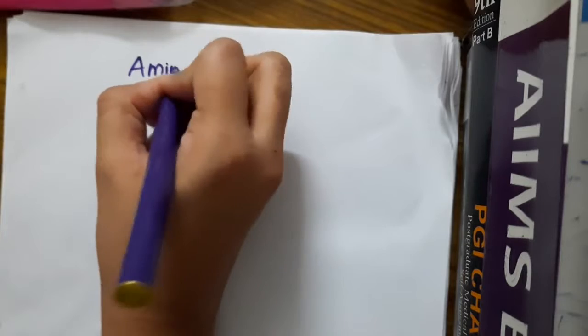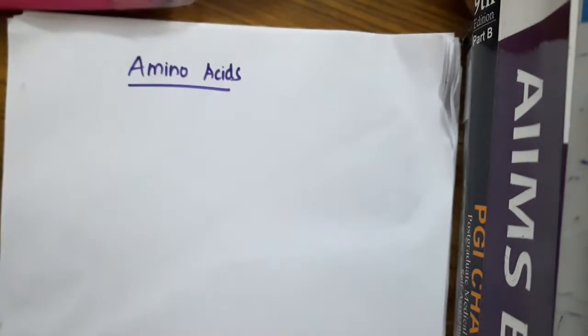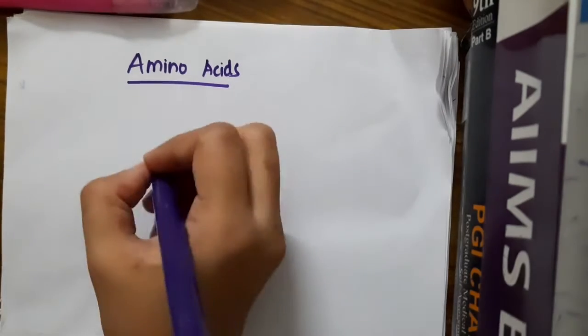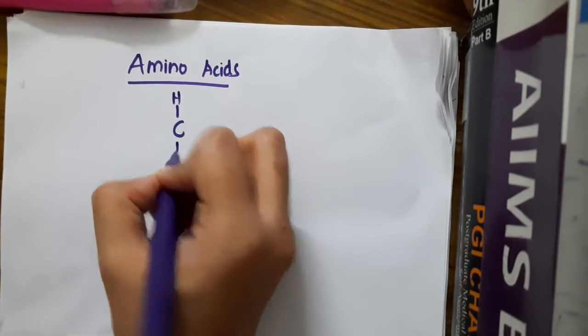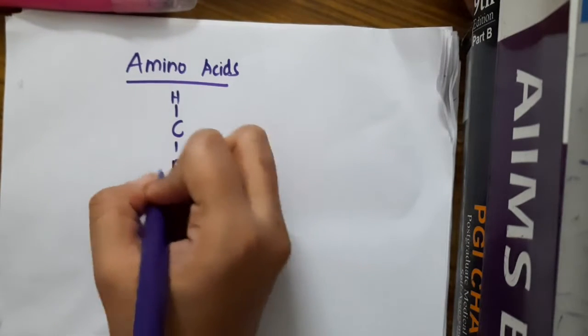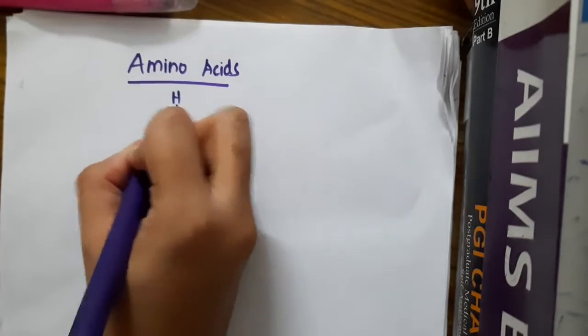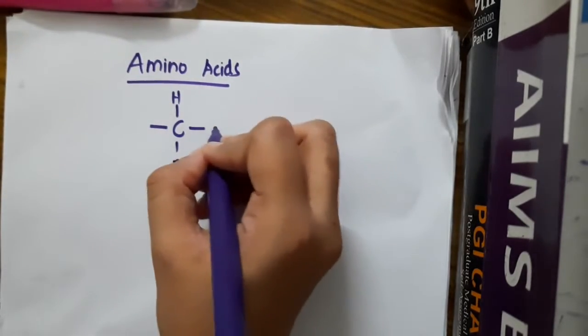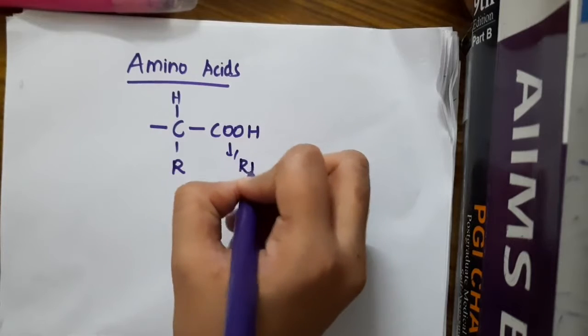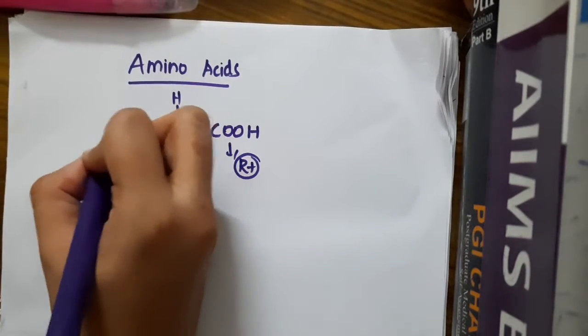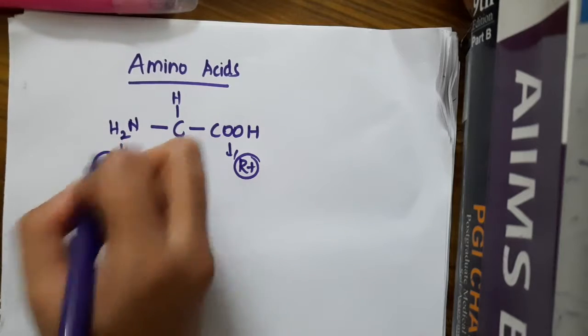Hello friends, welcome to a new chapter. Today in biochemistry we are going to learn about amino acids. Looking at the general structure of amino acids, there is an aliphatic chain with two functional groups: a carboxyl group attached to the right side and an amine group attached to the left side.